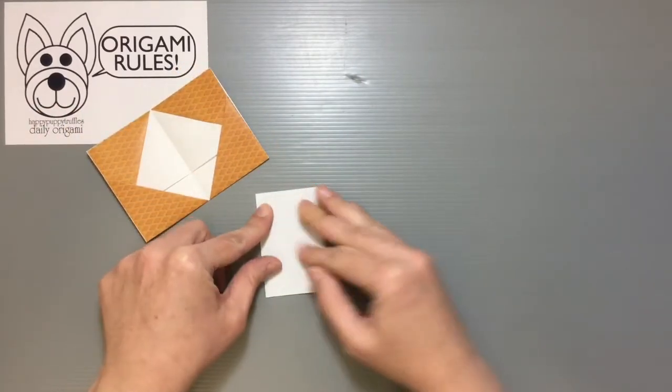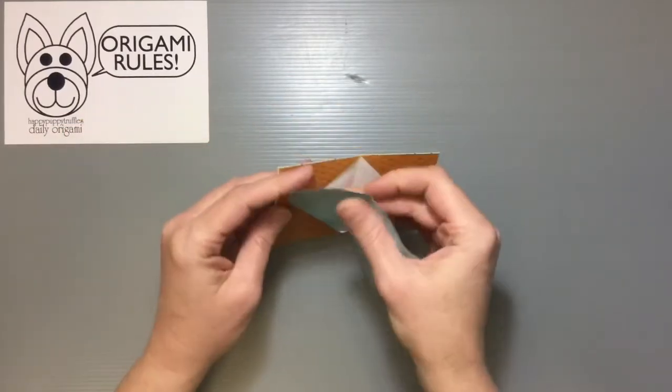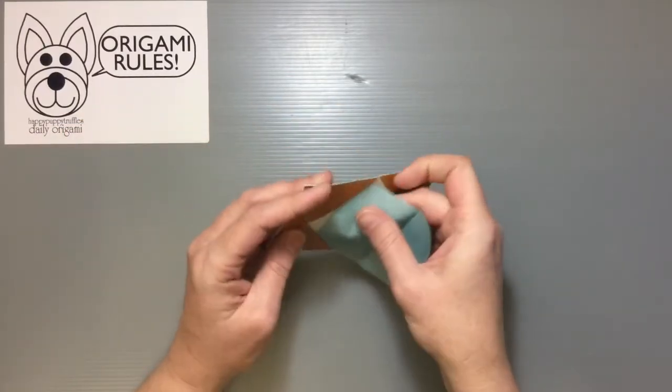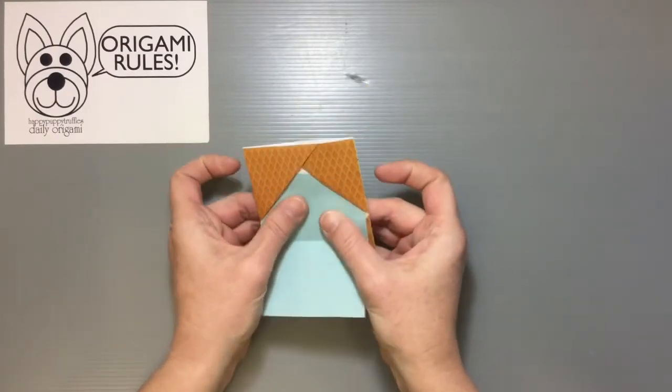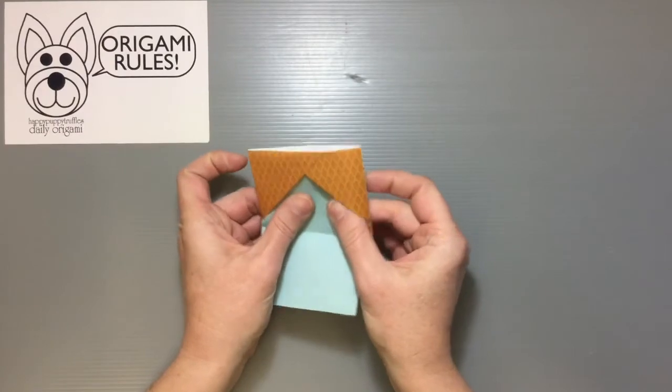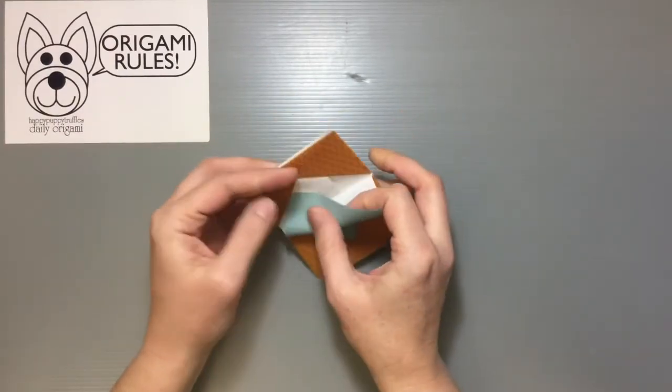Fold the paper in half with that color side facing up. And then I'm just going to take and first put these two sides into both of the corners. Shimmy the paper all the way to the back.